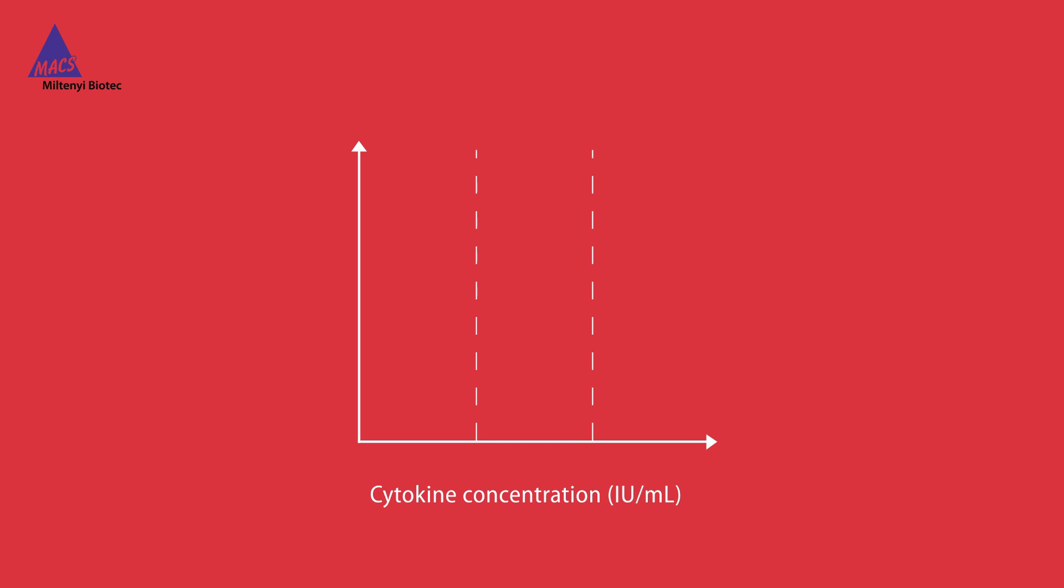The cytokine activity affects the response you measure. While low unit concentrations lead to low response rates, a small increase of units per milliliter can cause a huge jump in the response. Finally, the response curve hits a plateau.